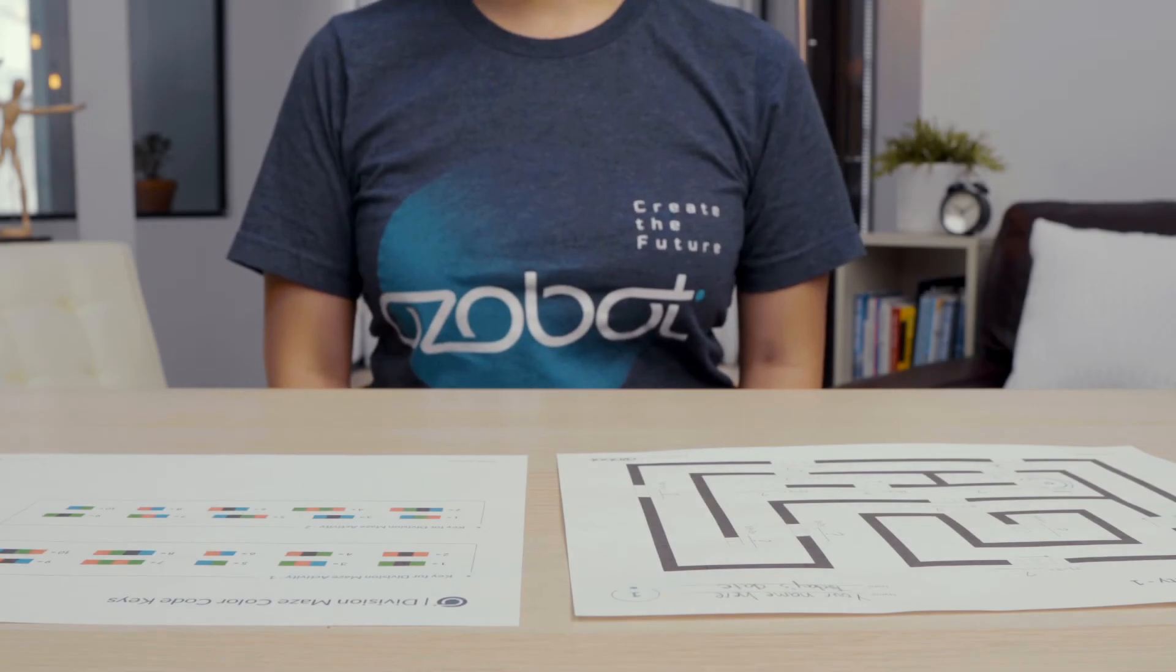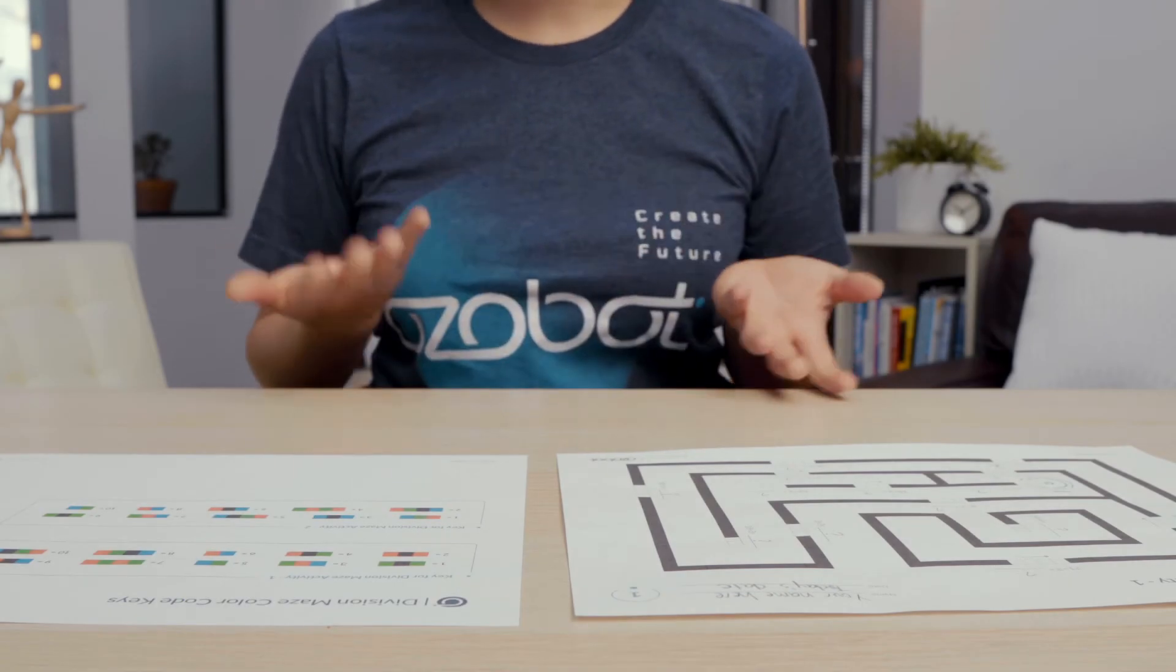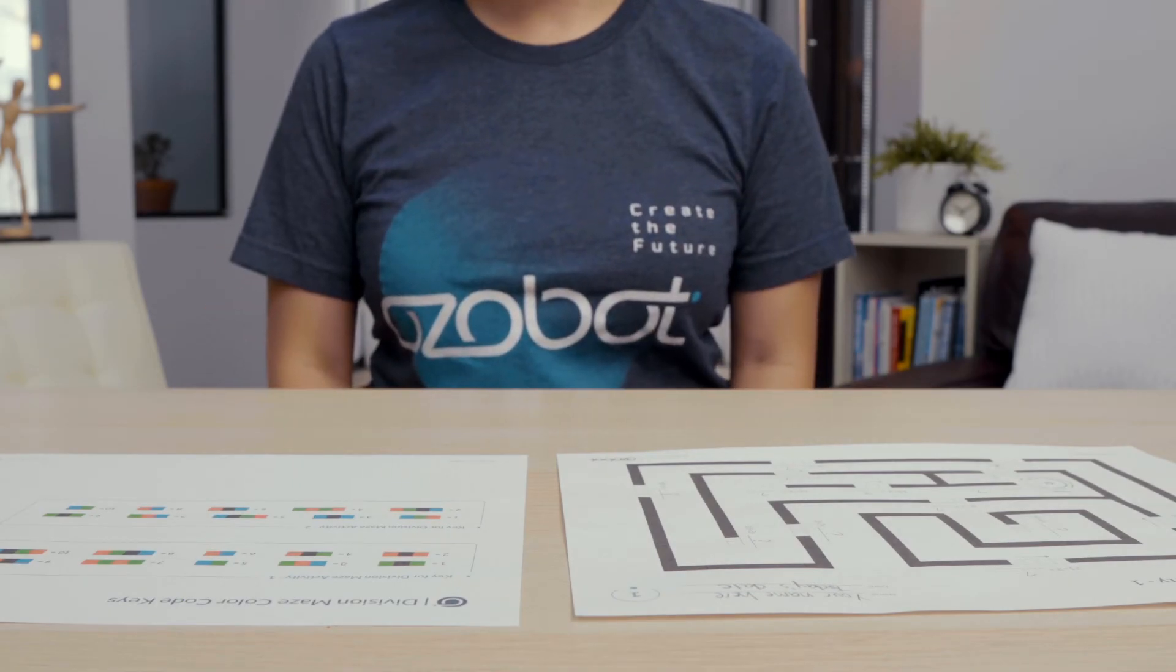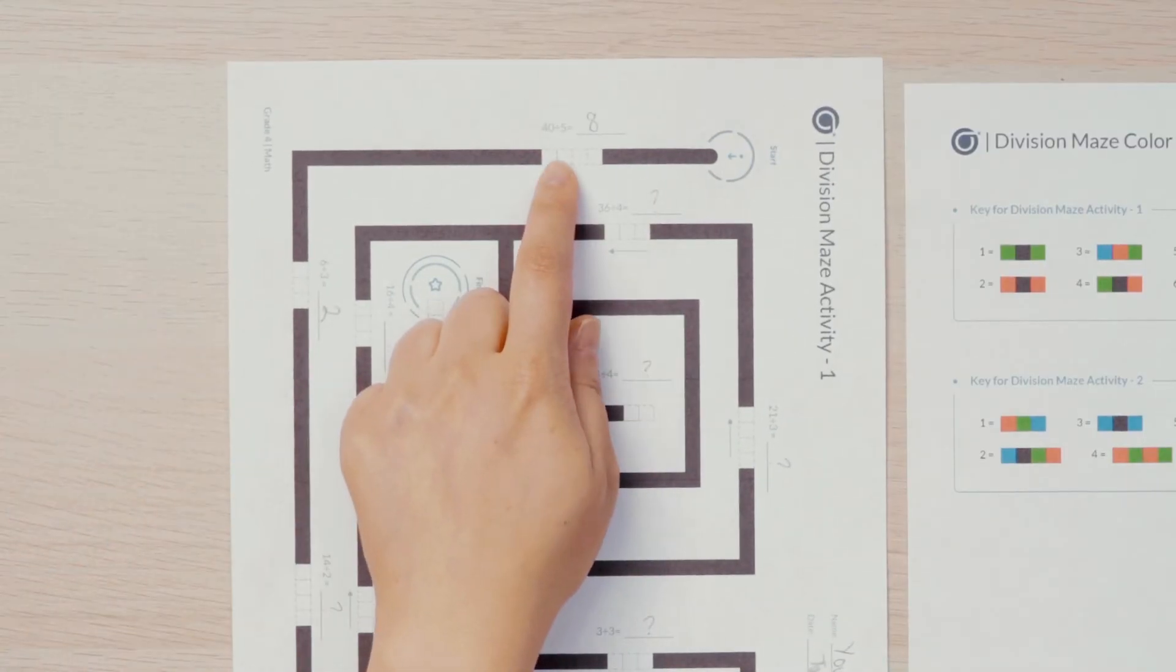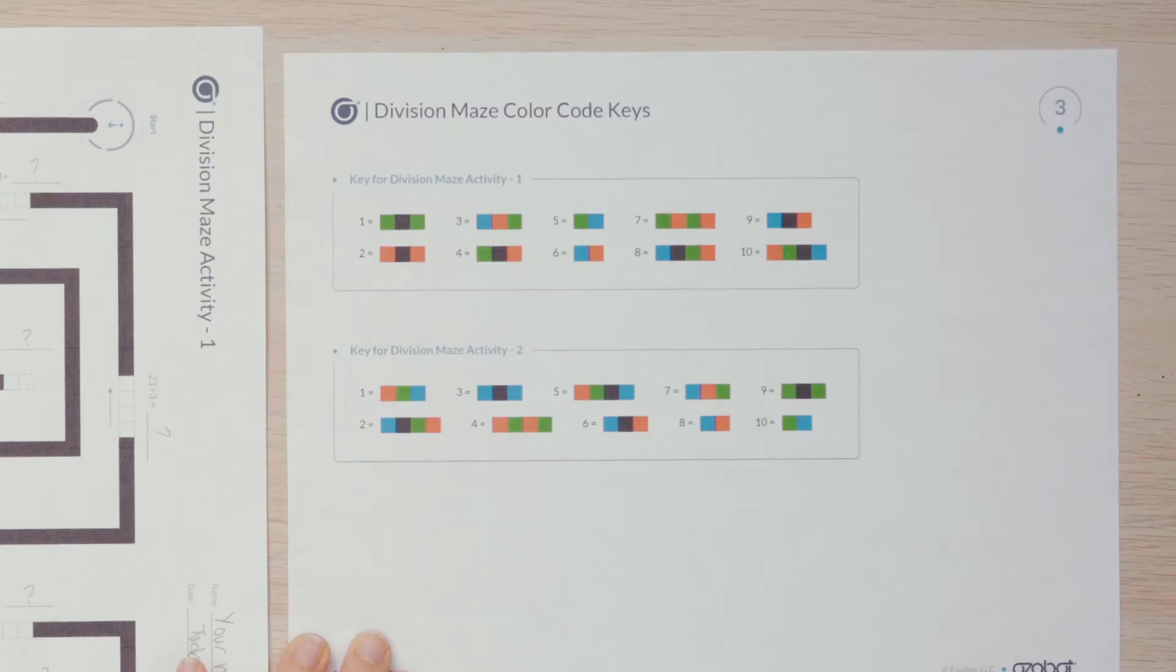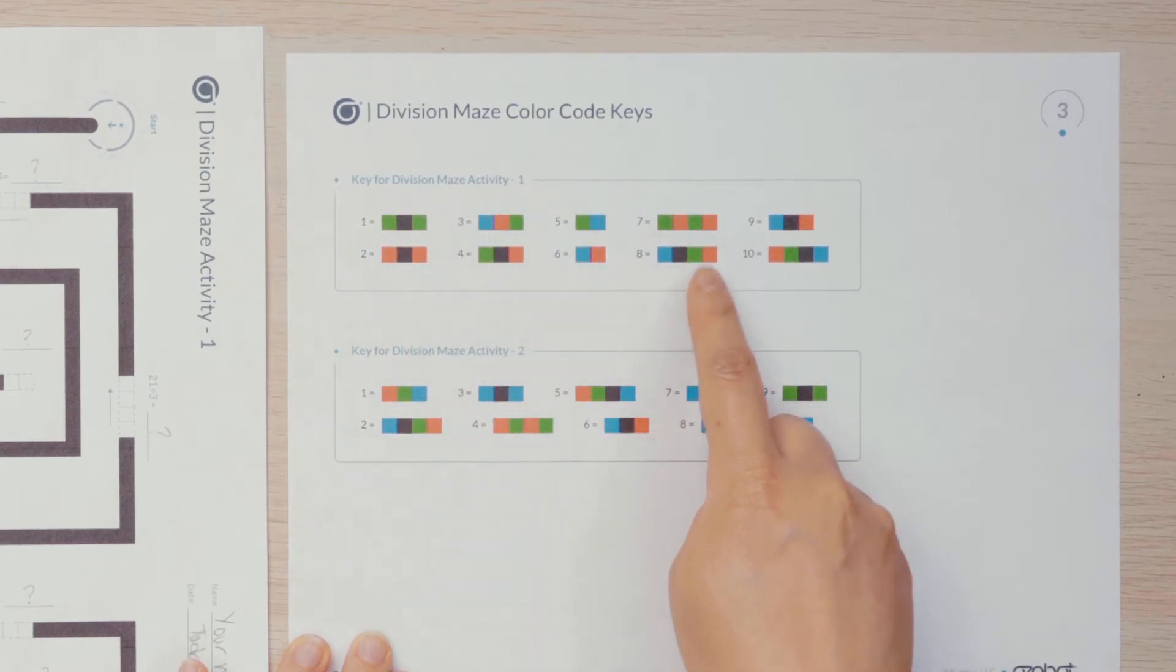Now that you've gotten the division facts completed, let's fill in the color codes on your maze. In the first example, 40 divided by 5, the quotient was 8. Find the number 8 in the key. Remember, this is division activity maze 1, so we'll be using that key.